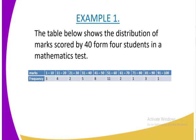They are represented by the frequency. We have the class width of 11 to 20, represented by 4. This means 4 students scored marks between 11 to 20. We have another class width of 21 to 30, represented by 2. Then 31 to 40, we have 5 students. From 41 to 50, we have 8 students.